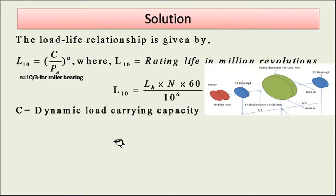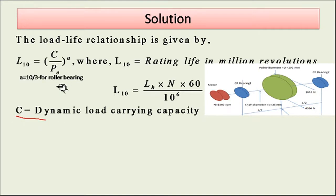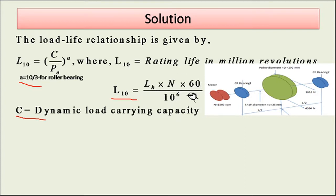Let us start the solution. The load-life relationship is given by L10 = (C/P)^a, where L10 is the rating life in million revolutions, C is the dynamic load carrying capacity to be found, P is the equivalent radial load, and a is a constant equal to 10/3 for roller bearings. First, we find the rating life in million revolutions using: L10 = Lh × N × 60 / 10^6.